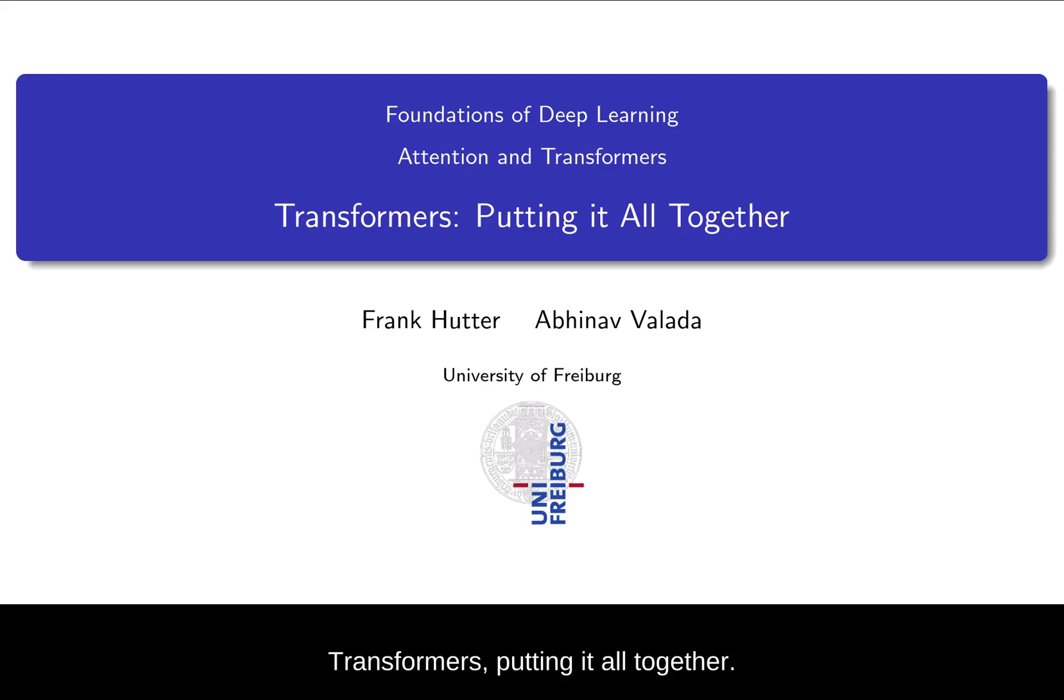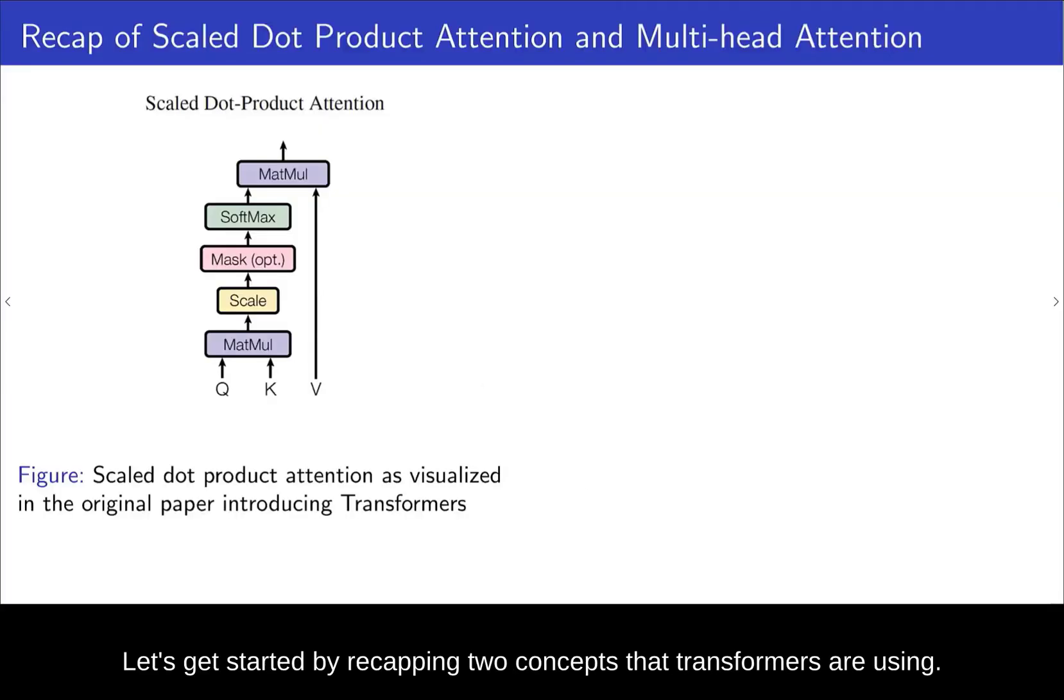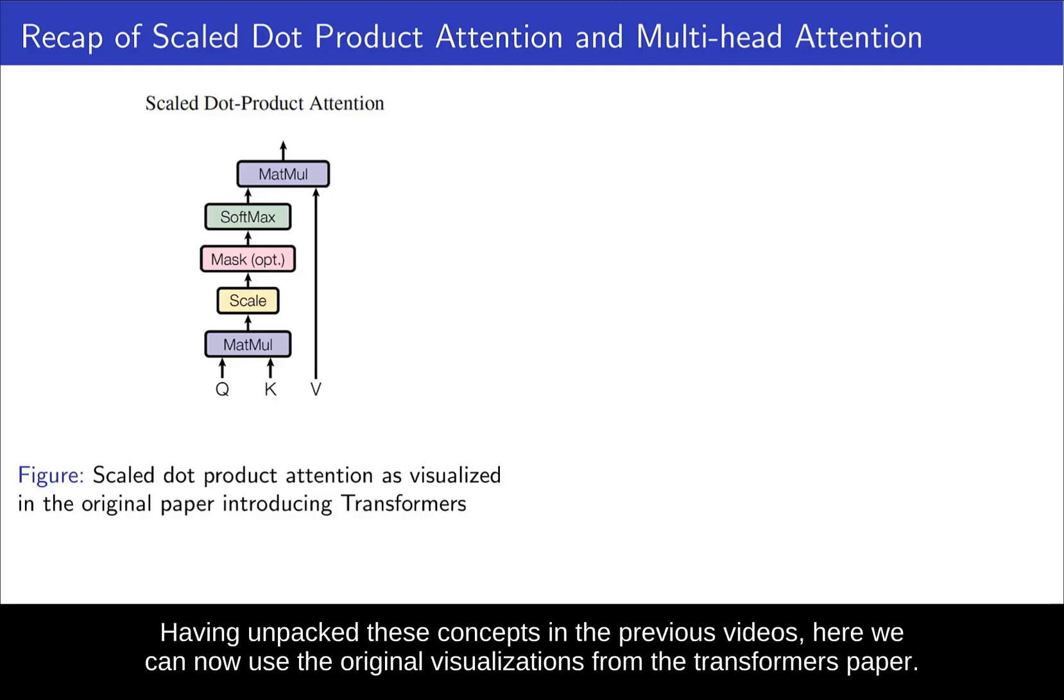Transformers, putting it all together. Let's get started by recapping two concepts that transformers are using. The first one is scaled dot product attention and the second one is multi-head attention. And having unpacked these concepts in the previous videos, here we can now use the original visualizations from the transformers paper.